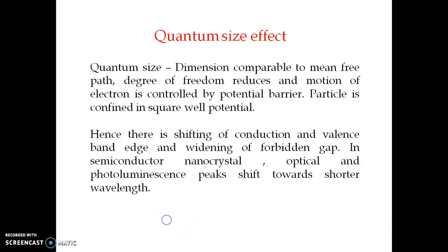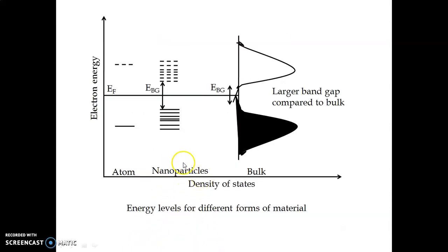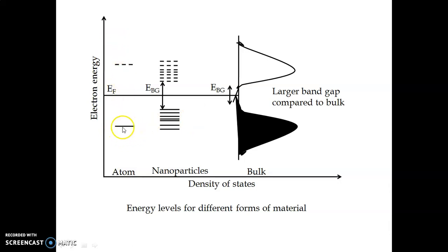The third factor is a shift in the conduction and valence bands, resulting in a change in the forbidden gap. In bulk material we have a valence band, a conduction band, and an energy gap. In an isolated atom, there is a valence energy level and a conduction energy level with a band gap between them.